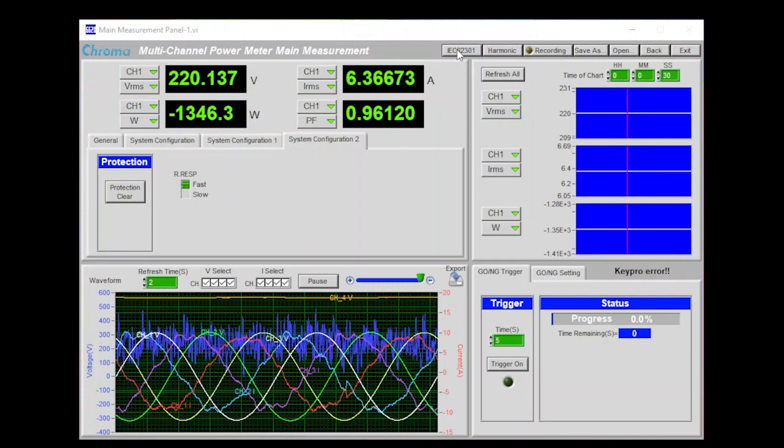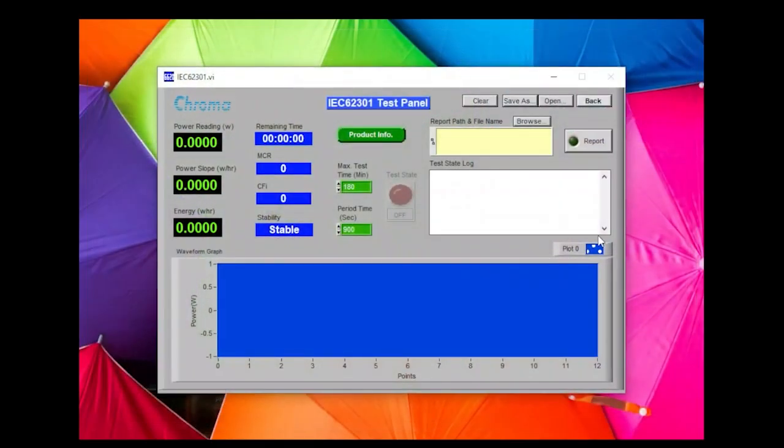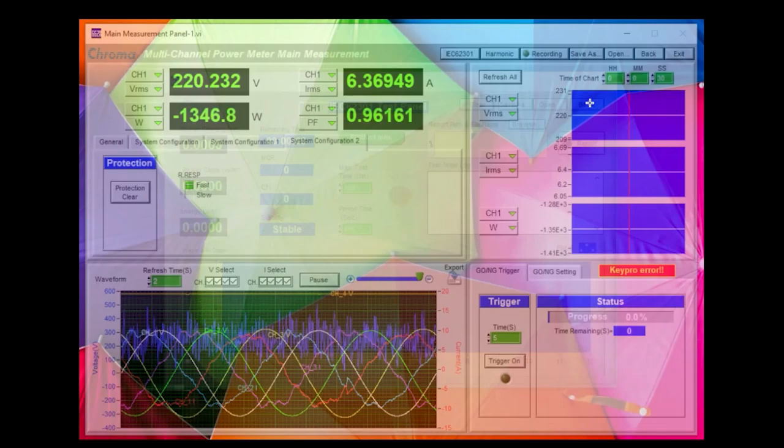Under the IEC 62301 test panel, the power meter will test the DUT to see if it complies with the IEC 62301 standard.